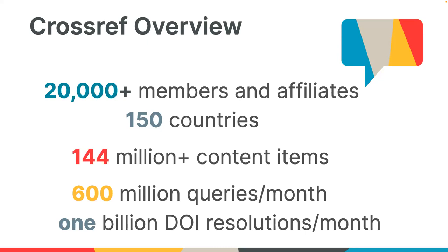When members register their content with us, they assign it a DOI — a digital object identifier — and we collect the metadata about that piece of content. We process the metadata so that connections can be made between publications, people, organizations, and other associated outputs. We then preserve the metadata for the scholarly record and make it openly available across a range of interfaces and formats so the community can use it and build tools with it.